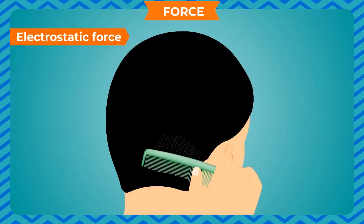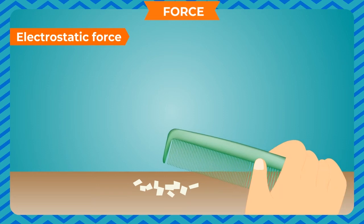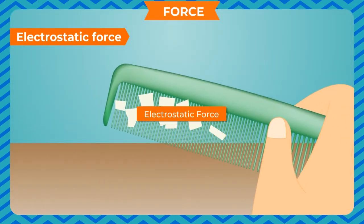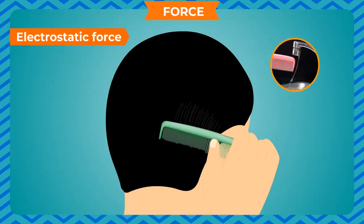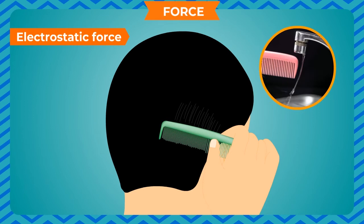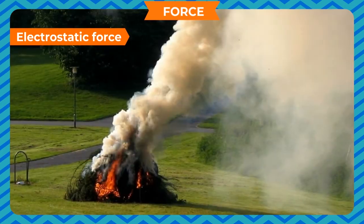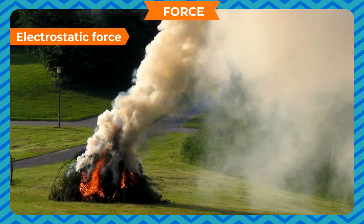Electrostatic Force: After combing your hair, when you bring the comb close to bits of paper, they are attracted towards it. This is an example of action-at-a-distance force called electrostatic force. Run the comb through your hair again; this time hold it near a thin stream of water from a tap — the streaming water will move towards the comb. Electrostatic force is also useful in controlling pollution by separating solid pollutant particles from factory smoke.